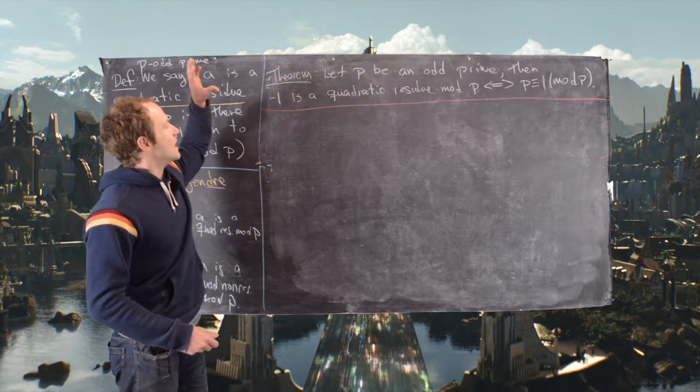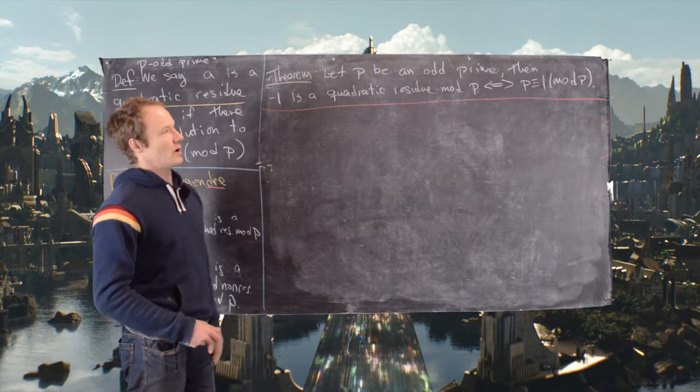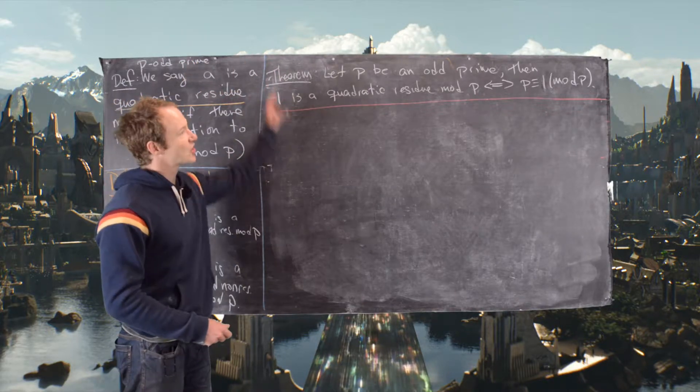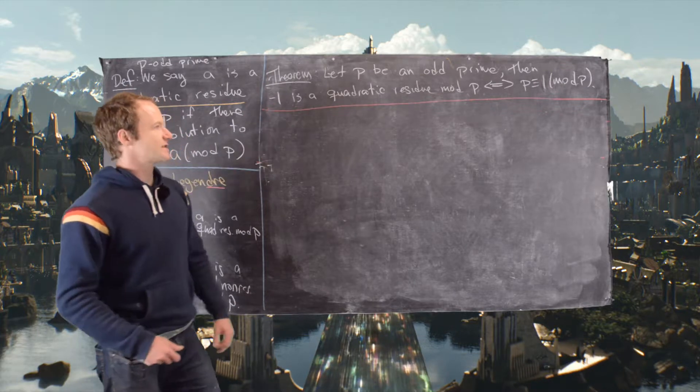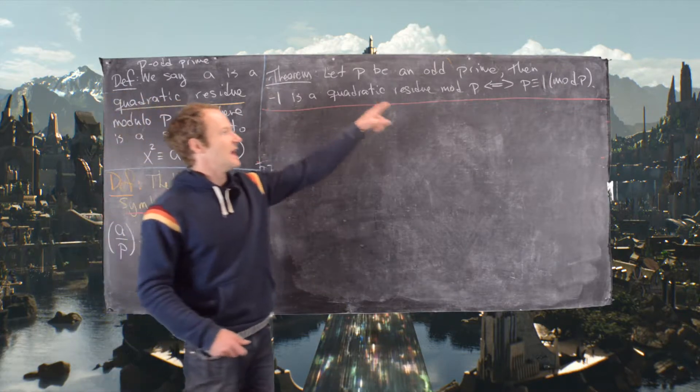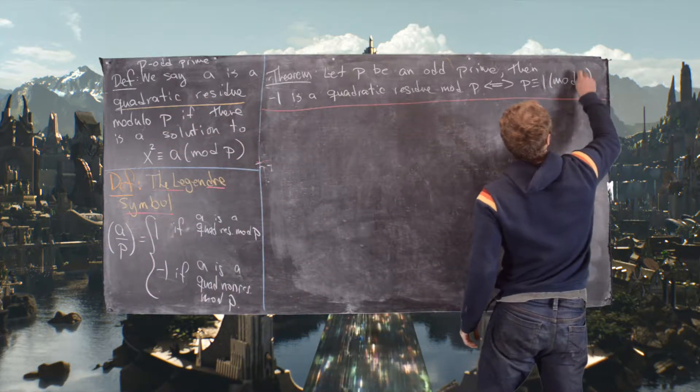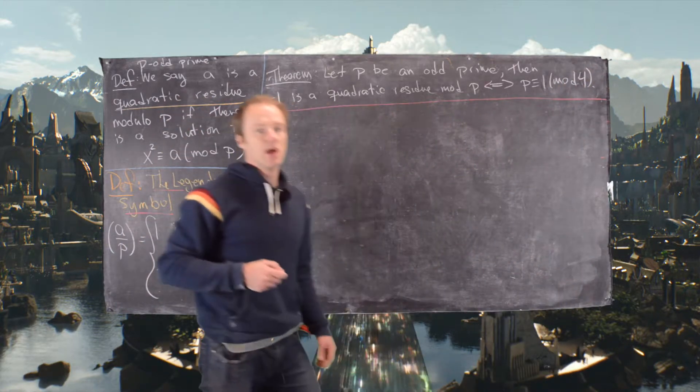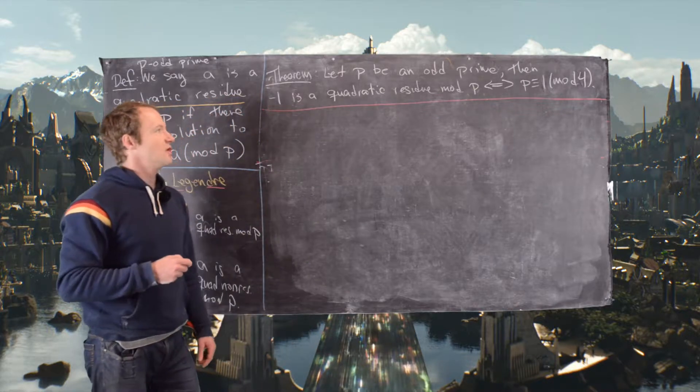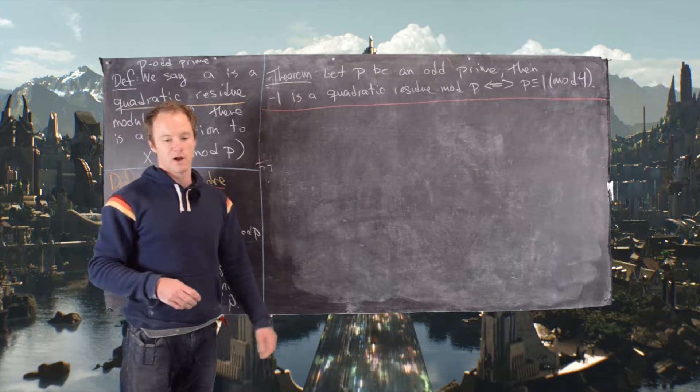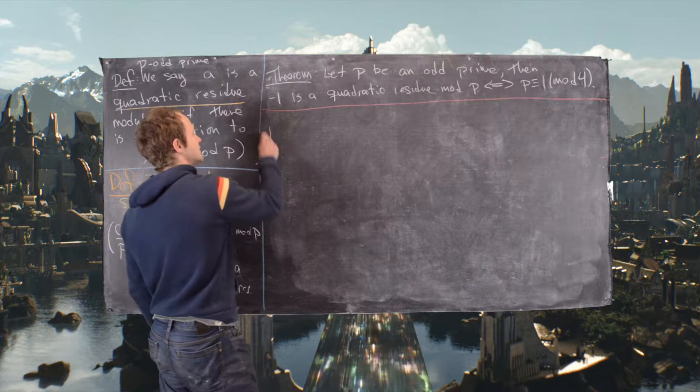Okay, so what we want to look at is when is negative 1 a quadratic residue mod p? And it turns out that negative 1 is a quadratic residue mod p if and only if p is congruent to 1 mod 4. So those are the types of primes where the square root of negative 1 makes sense. So let's look at the proof of this.